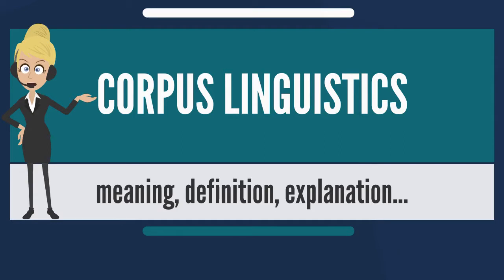A landmark in modern corpus linguistics was the publication by Henry Kučera and W. Nelson Francis of Computational Analysis of Present-Day American English in 1967, a work based on the analysis of the Brown Corpus — a carefully compiled selection of current American English totaling about a million words drawn from a wide variety of sources.